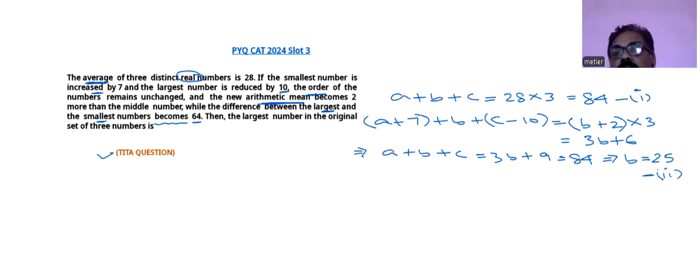Now third one: the difference between largest and smallest number becomes 64. Largest one is c minus 10, minus the smallest one a plus 7, that is 64.